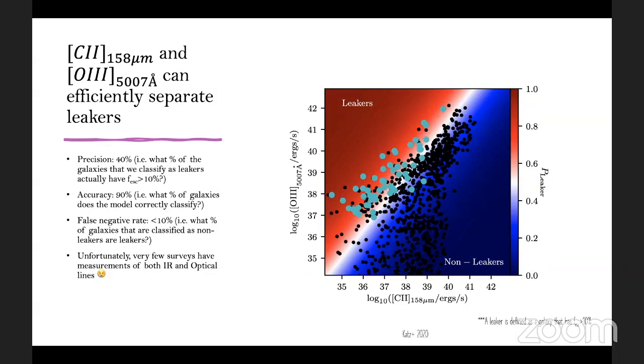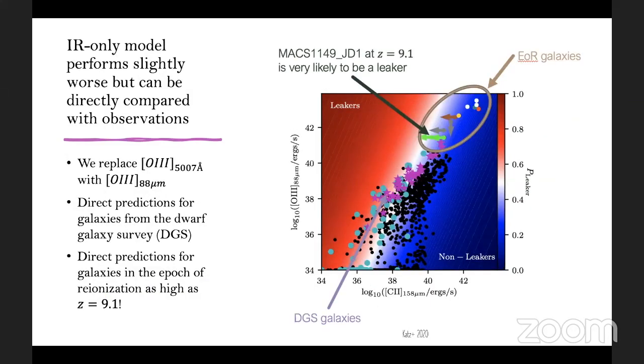Unfortunately, very few surveys actually have measurements of both infrared and optical emission lines. So in order to try to directly compare this with observations, we've trained a different logistic regression model where we've replaced the oxygen-3 5007 angstrom line with an oxygen-3 88 micron line, which is also in the infrared. Since our logistic regression model didn't pick this line out, it's going to be slightly less accurate. But you can see from this plot, it does a relatively good job still of separating the cyan point leakers from the black point non-leakers. Now that both of these lines are in the infrared, we can directly compare to observations. The magenta points represent galaxies from the dwarf galaxy survey. And what's interesting is that they tend to straddle these white regions, which means some of these galaxies we actually predict to be leakers while many we predict to be non-leakers.